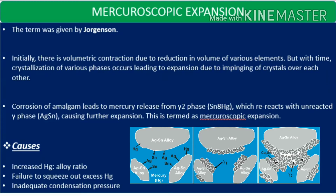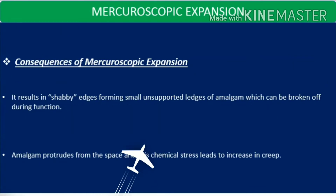The causes of mercuroscopic expansion include increased mercury to alloy ratio and failure to squeeze out excess mercury or inadequate condensation pressure. Consequences include shabby edges forming small unsupported ledges of amalgam which can be broken off during function. The amalgam gives a very untidy and shabby appearance, amalgam protrudes from the space, and this chemical stress leads to increased creep values.